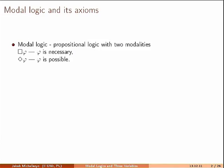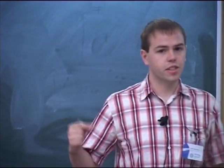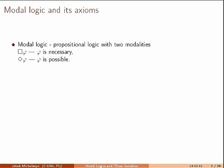Let me start with the definition of modal logic. The syntactic definition is very easy — it's just propositional logic with two modalities: square, which is read as 'it is necessarily that', and diamond, which is read as 'it is possible that'.